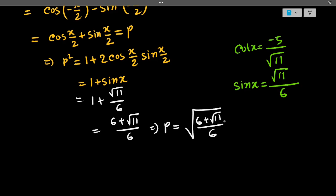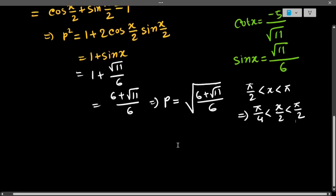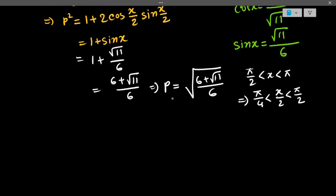Now many of you can ask why I did not give plus-minus here. I did not give plus-minus here because if you analyze that π/2 < x < π is given, if we multiply half in all the sides, then it will be π/4 < x/2 < π/2. So x/2 is a positive acute angle, so there is no plus-minus, it is positive.